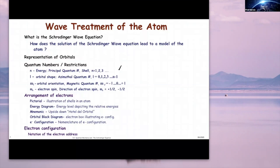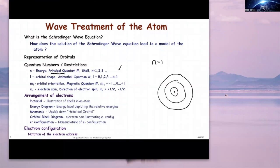Here is what we call the principal quantum number. The principal quantum number, if you want a visual, is basically the shells of an atom. If this is the nucleus, then the shell of the atom is represented by the principal quantum number. The first shell is n equals 1, the second shell n equals 2, the third shell n equals 3. For an atom, you actually have n equals infinity — there are actually an infinite number of shells.